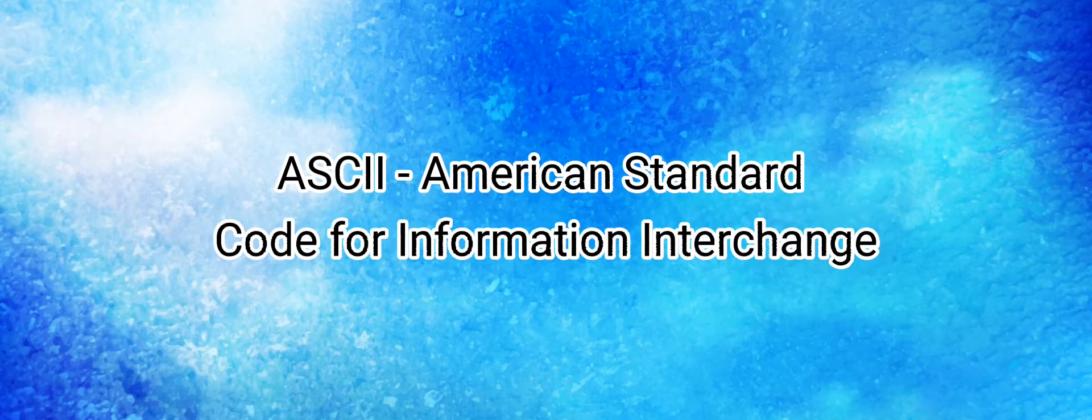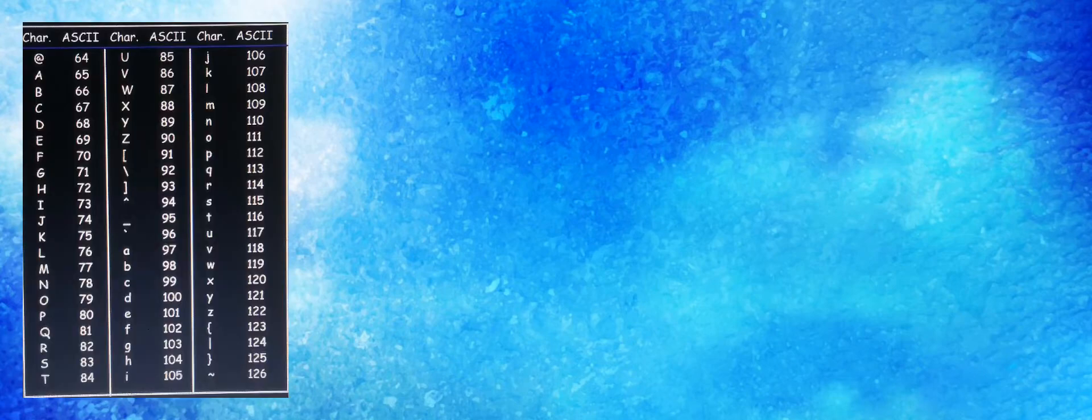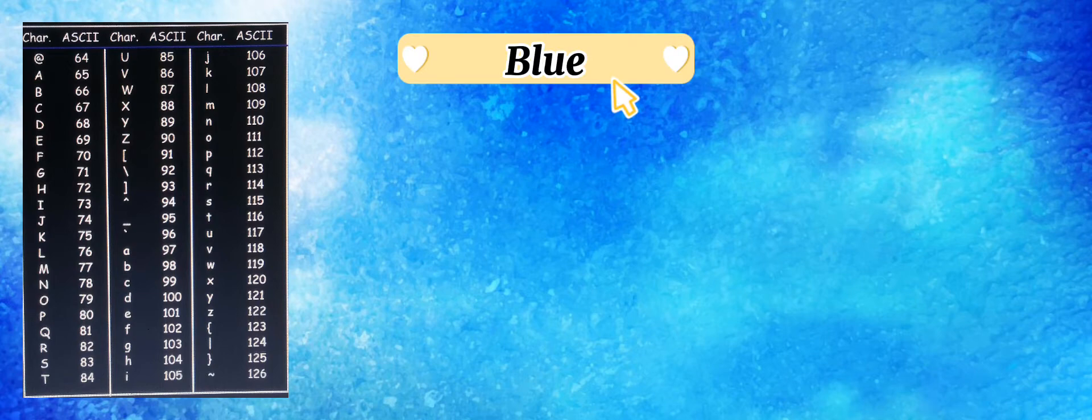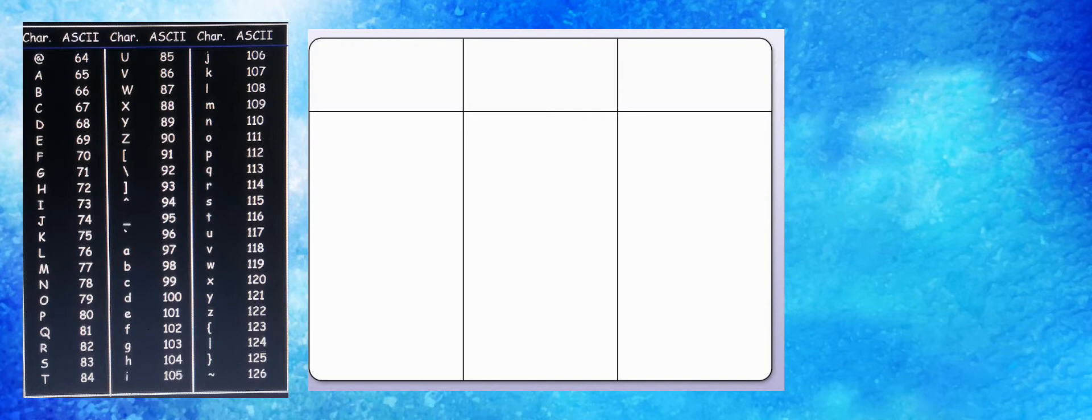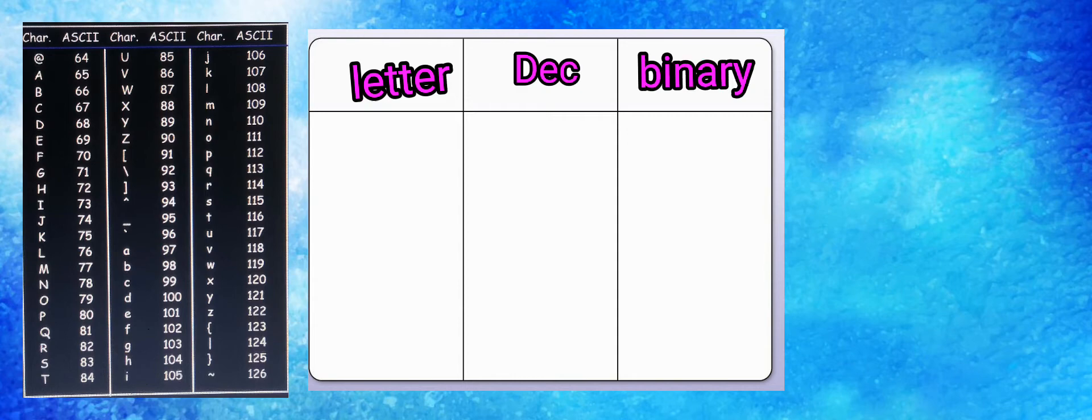In this video, we're going to focus on the ASCII code, which stands for American Standard Code for Information Interchange. I have a given partial ASCII table here, and I'm going to convert the word blue to binary. I'm going to show a table that will make this easier for us with the letter, the decimal value, and then the binary value. Our first letter is B, then L, U, and E.